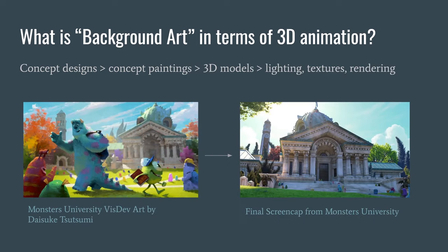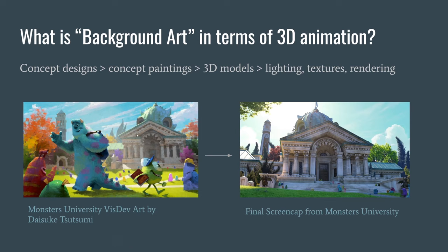In 3D animation, we're usually looking at visual development art — concept designs moving into concept paintings, into 3D models, into lighting, texturing, and rendering. Here we have visdev art from Monsters University by Daisuke Sitsumi on the left, and the final screencap on the right. You can see the building designed in the visdev piece finalized in the final screencap.